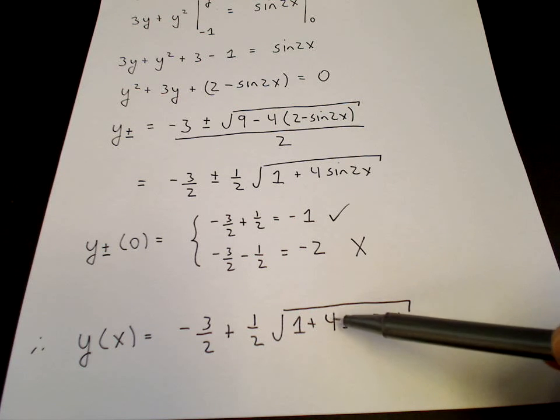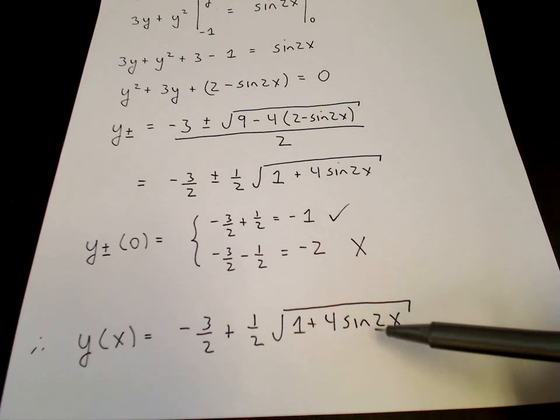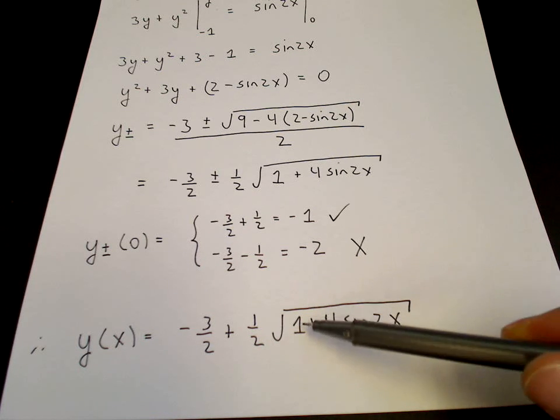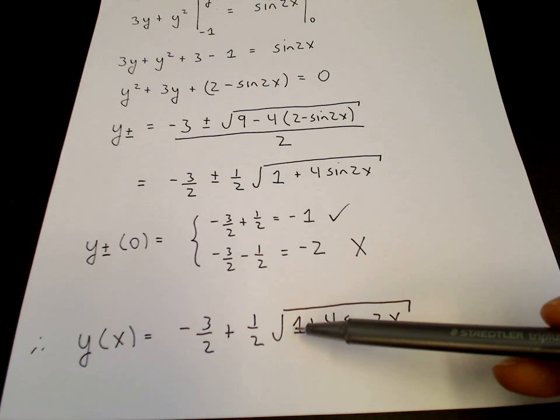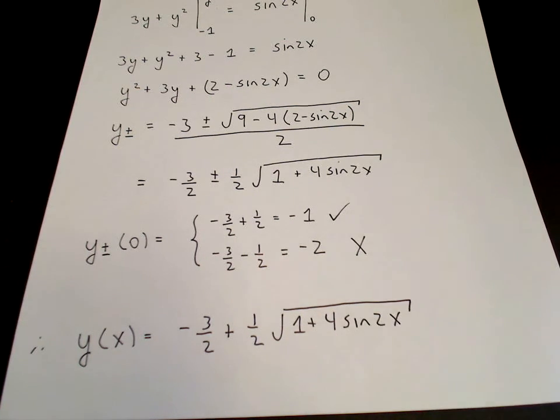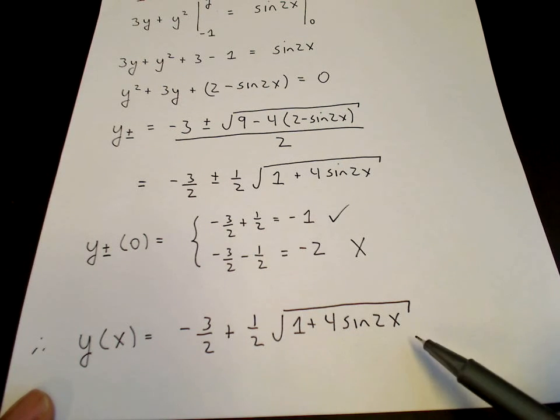So at some point, 4 sine 2 x can become negative 1, when sine 2 x is negative 1 quarter. The square root vanishes, after which the square root becomes the square root of a negative number. And at that point, the solution ceases.